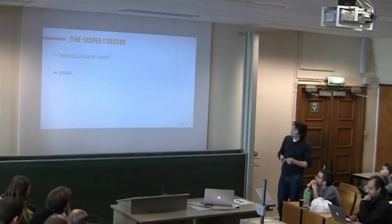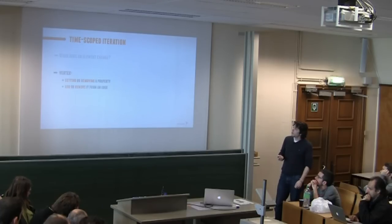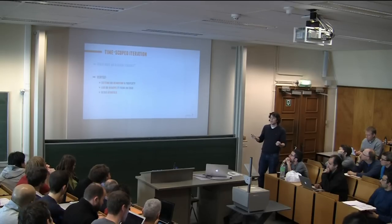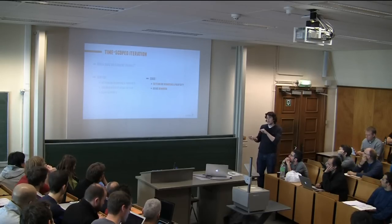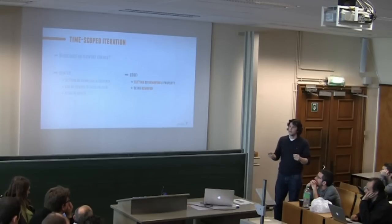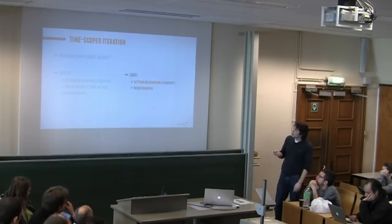How do we define change? For a vertex, whenever we set or remove a property we consider that a change. If you add or remove a vertex from an edge, we also consider that a change, and just when you remove the vertex entirely. For an edge, it's basically setting or removing a property or the edge being removed entirely. In the beginning we experimented - if you change a property on an edge, like a relationship between two people who got married, you could say that also has an impact on the vertices. But it gets really confusing and it's not easy to track locally, so we didn't go that way.